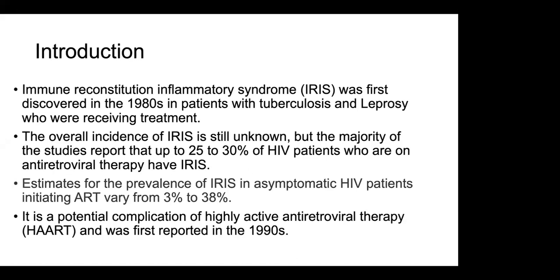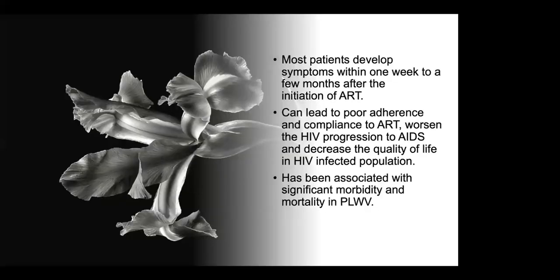Estimates of the prevalence of IRIS in asymptomatic HIV patients initiating ART vary from 3 to 38 percent. The potential complication of highly active retroviral therapy was first reported in the 1990s. Most patients develop symptoms within one week to a few months after ART started. It can lead to poor compliance and adherence to ART, worsen HIV progression to AIDS, and decrease the quality of life of the affected population. It has been associated with high morbidity and mortality in people living with HIV.